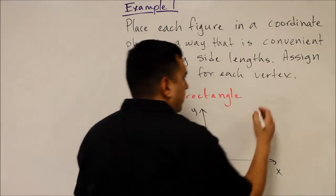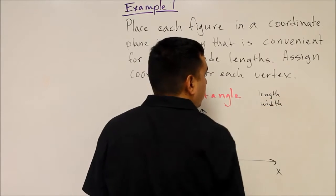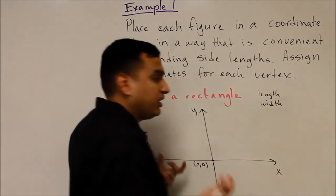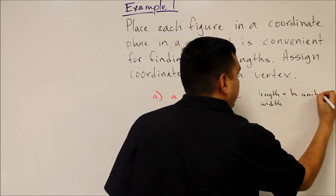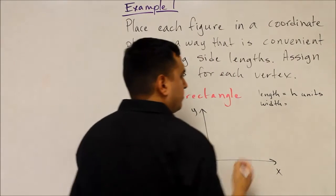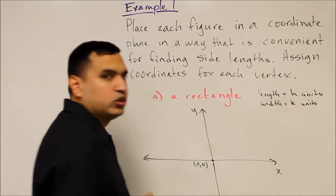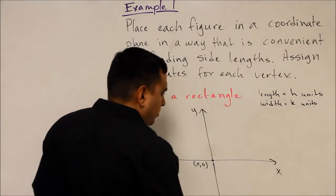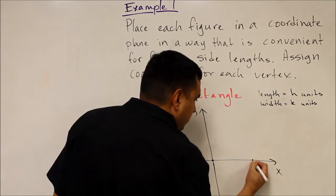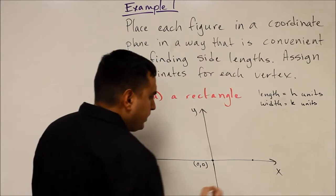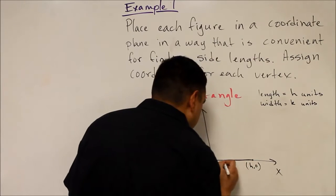Because we're talking about a rectangle, it has a length and a width. Since we're working in general terms, we'll assign a variable to the length — we'll call that h units, whatever that number might come out to be. And then we have a width, and we'll use the variable k. Starting at (0, 0) and drawing a rectangle, we go horizontally h units, so we make that point (h, 0), which represents the length.